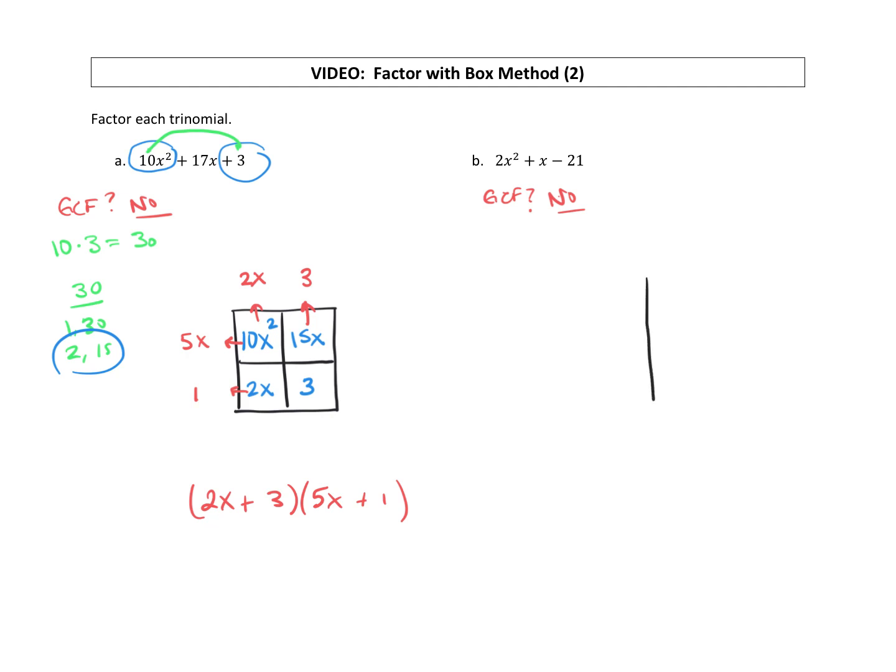So we're going to draw our box next. I might be drawing a little bigger, felt tight on space. And then let's fill in our terms. We're going to put the first term, the 2x squared, in the top left box. The last term, negative 21, goes in the bottom right.